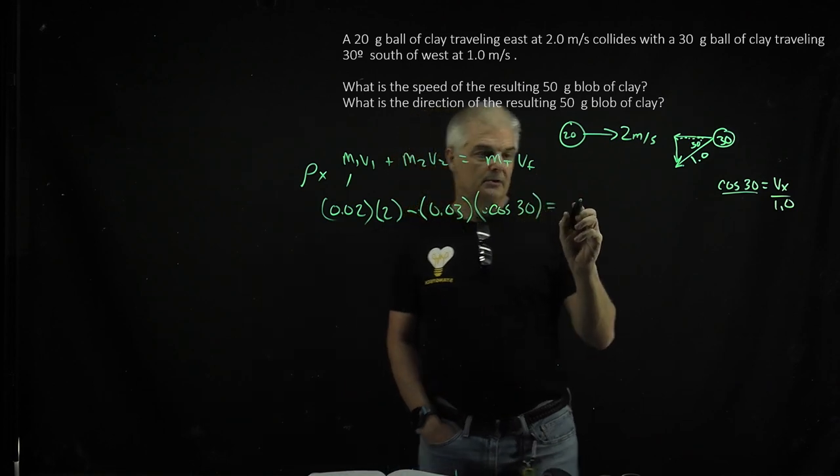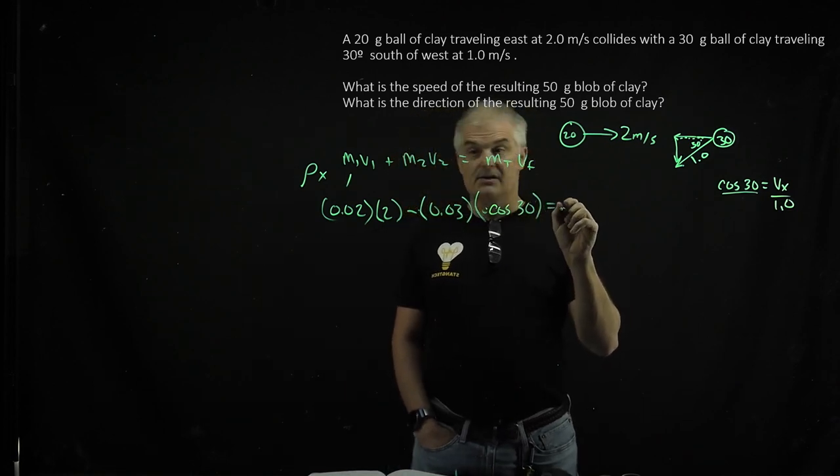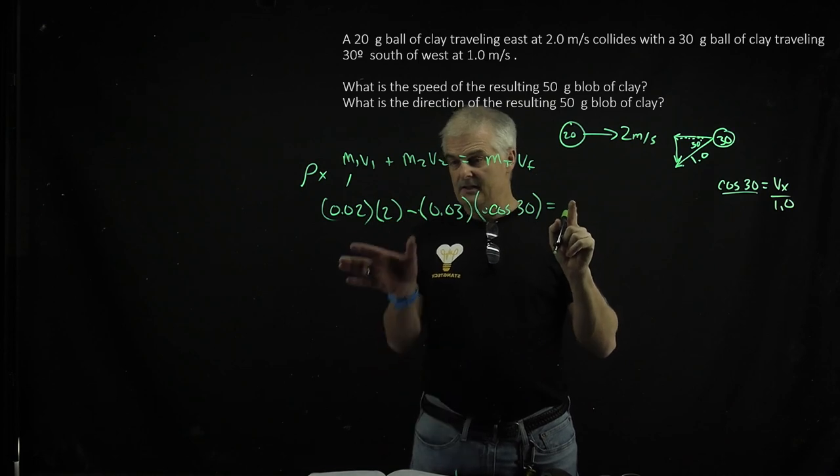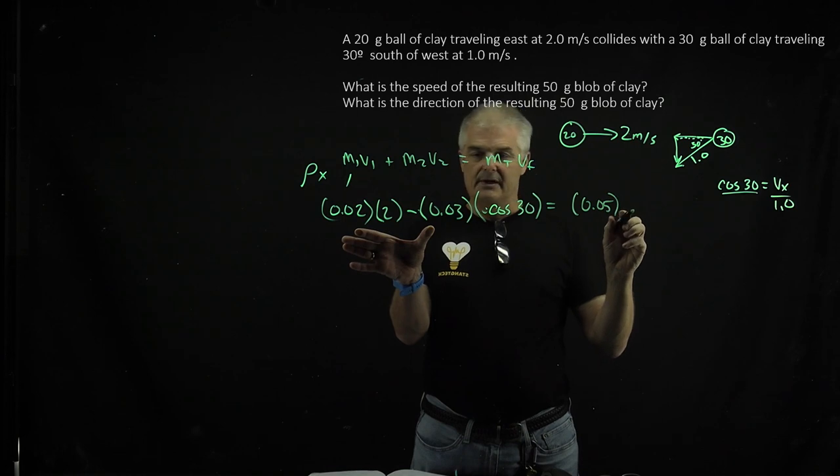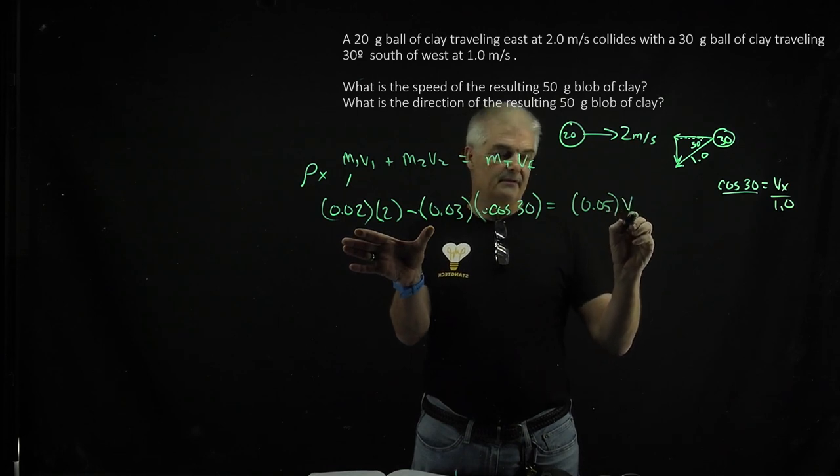This equals the total mass at the end, which is 0.05 kg when the clay balls stick together, times the final velocity.